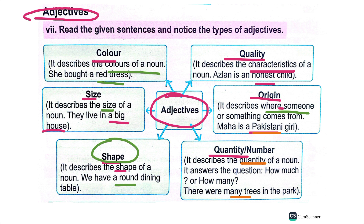So these are the types of adjectives. For example, 'he is an honest child' — here 'honest' is the adjective. 'Maha is a Pakistani girl' — here 'Pakistani' is the adjective.